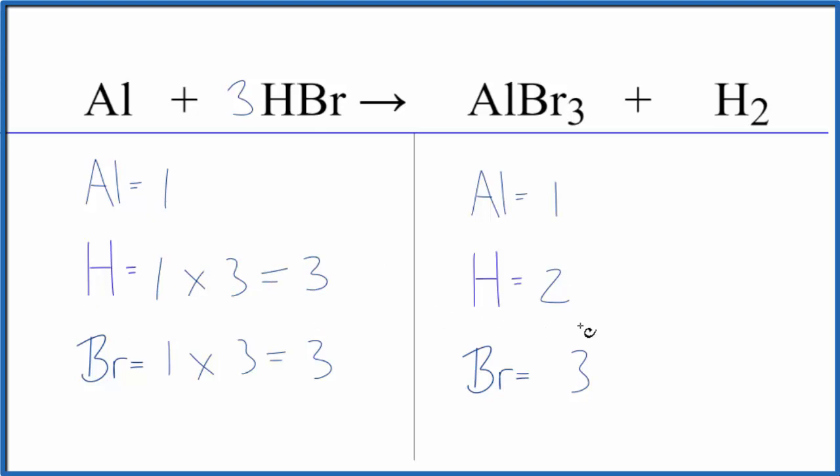So we have a bit of a problem here. We have three hydrogens and then only two here. Probably the best thing to do at that point is to double the coefficient here. And that'll give us an even number, which we can then balance. So let's do that.